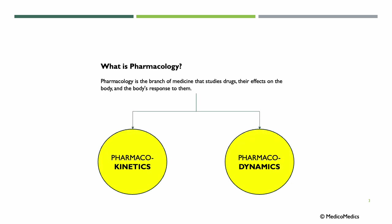Pharmacology is the branch of medicine that studies drugs, their effects on the body, and the body's response to them. We can divide it into pharmacokinetics — what the body does to the drug, like absorption or metabolism — and pharmacodynamics — what the drug does to the body, such as mechanisms of action and its effects.